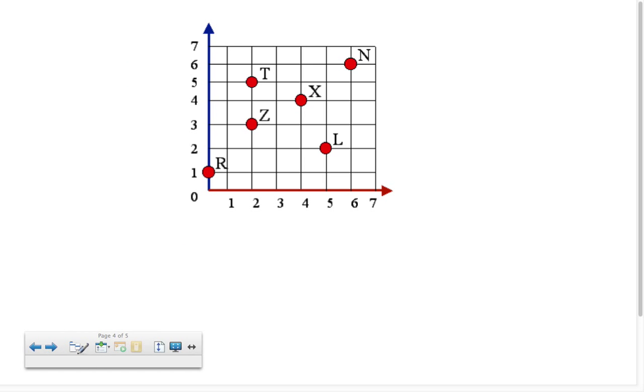Let's try practicing with these points. You can see R, Z, T, X, L and N. I'll give you a second to think about it before I spoil it for you but first of all what do you suppose the ordered pair is for this R right here? Think about it. We don't move at all this way so we stay put. That makes it 0 for the x-axis but we do go up 1 so that makes it 1 for the y-axis.